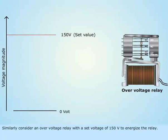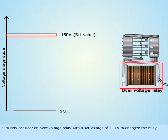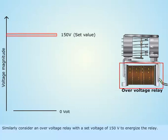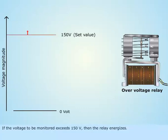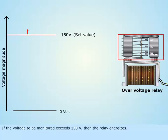Similarly, consider an over voltage relay with a set voltage of 150 volts to energize the relay. If the voltage to be monitored exceeds 150 volts, then the relay energizes.